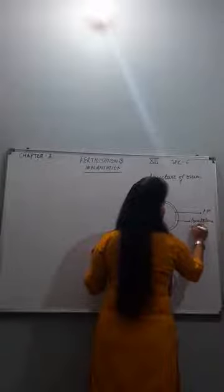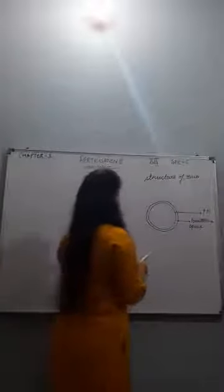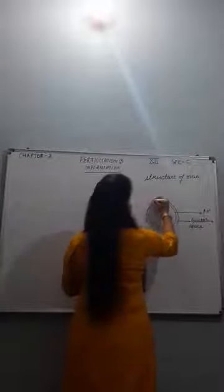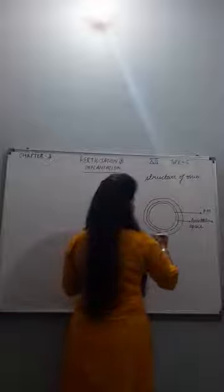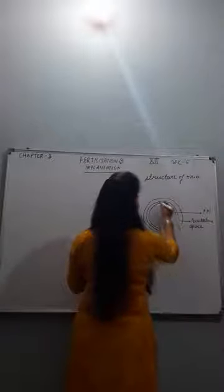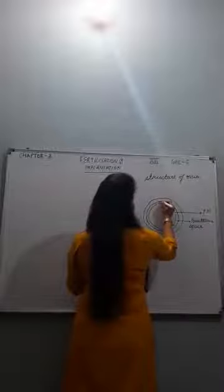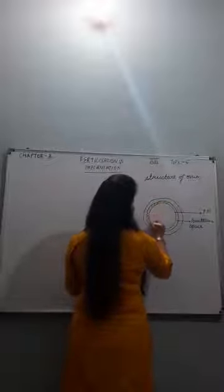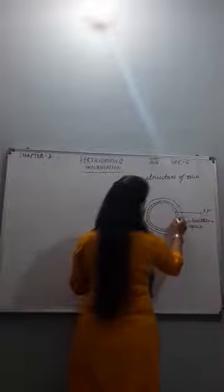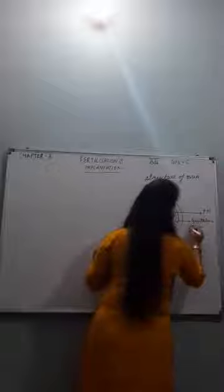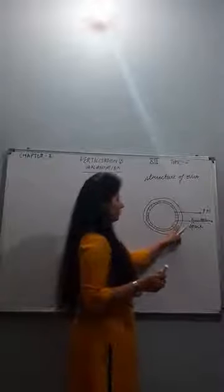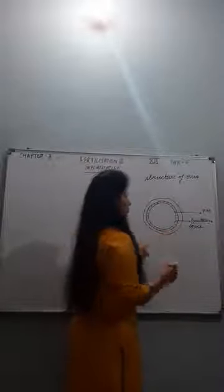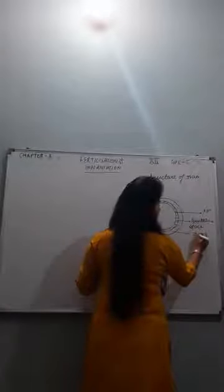Around the plasma membrane is the zona pellucida. The perivitelline space is shaded in red so you can recognize it properly. The white portion between the perivitelline space and the corona radiata is the zona pellucida.